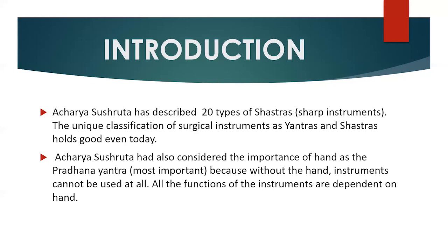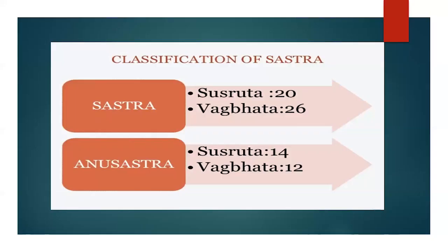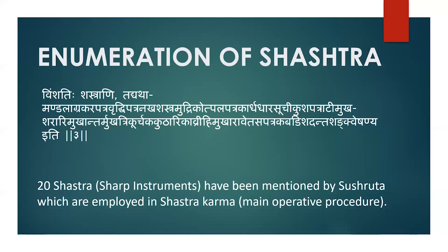He also considered the hand as the Pradhan Yantra, as all the functioning soft Yantra as well as Shastra are dependent on it. Acharya Shushruta described 20 types of Shastra and 14 types of Anushastra — instruments or materials which can be used in the absence of a particular Yantra or Shastra. Acharya Vagbhat described 26 types of Shastra and 12 types of Anushastra. There are 20 Shastra or sharp instruments mentioned by Acharya Shushruta which can be used in performing the Ashtra Shastra karma, or main operative procedures in Ayurveda.